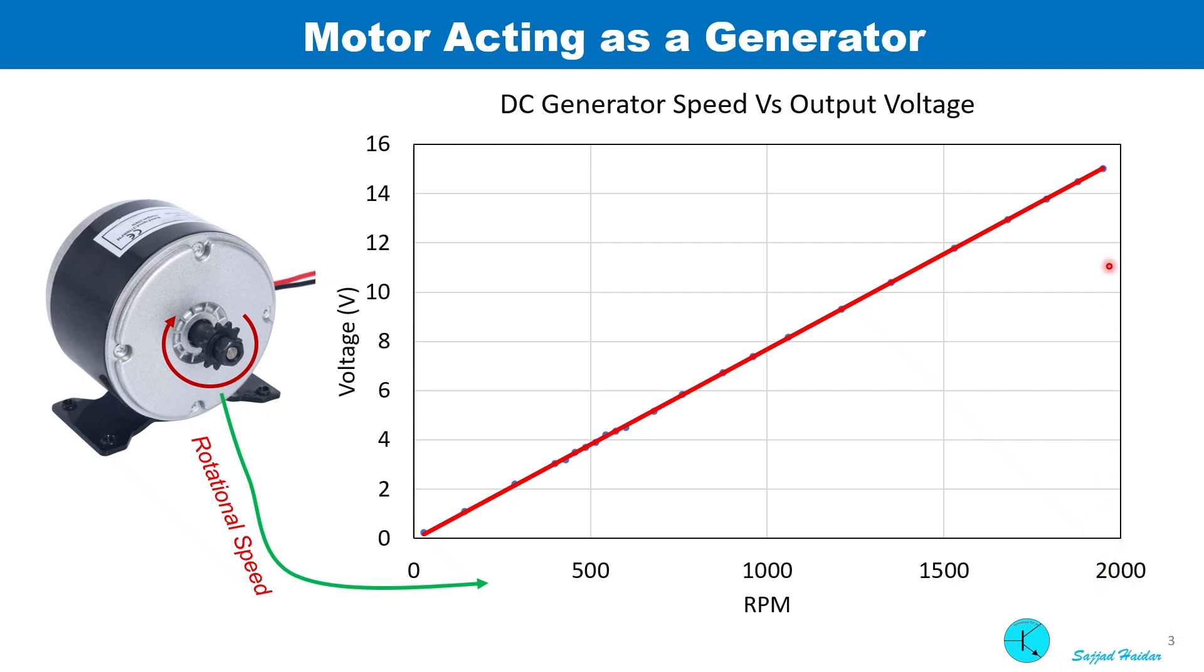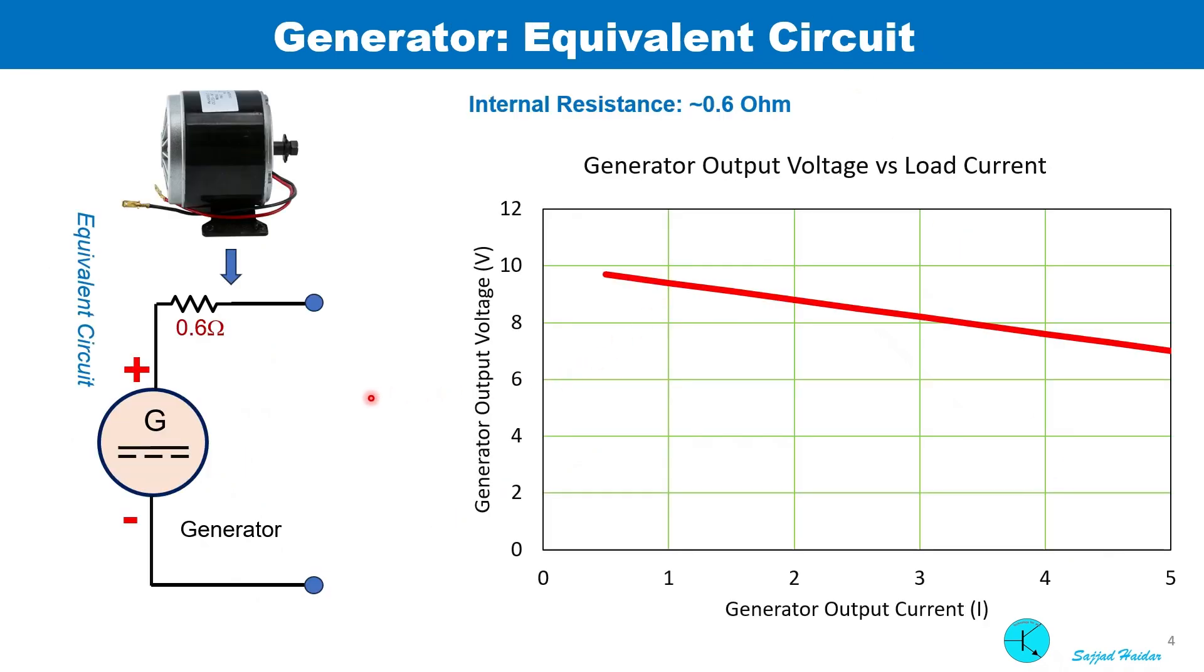At constant speed, I connected various loads at the terminals and measured the voltage and current. The characteristics is shown here in this plot. Due to internal resistance of 0.6 ohm, we can see a tiny droop. It should be mentioned that every generator has this internal resistance, and in this case 0.6 ohm is on the low side.